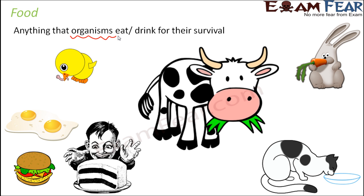In this lesson we are going to talk about where we get our food from. We might eat a burger which has a lot of things in it — cheese, veggies, bread, sauce. So from where exactly are we getting all these things? We will look in detail at the sources of food.